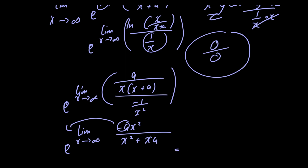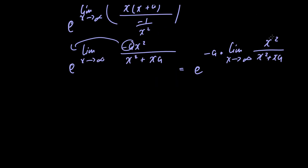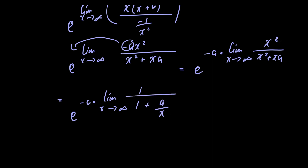We can simplify this to e raised to the limit as x approaches infinity of negative a times x squared divided by x squared plus x times a. We then factor a out of the limit, giving e raised to negative a multiplied by the limit as x approaches infinity of x squared divided by x squared plus x times a. Since the highest power is x squared, we divide everything by x squared, yielding the limit of 1 divided by 1 plus a over x.